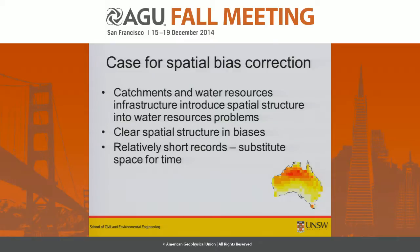The final reason for using spatial information is that we have relatively short records to define the bias properties. We've found that the biases aren't stationary — they change over time — so we need to include as much information as we can to come up with stable estimates of bias. Ultimately, we're assuming that the biases we have in the current climate stay the same into the future.